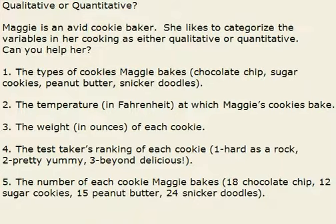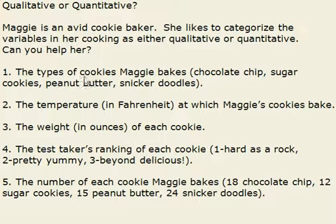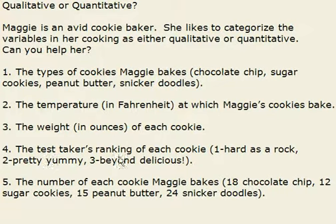Well, I sure hope we can help her. Below are five different variables, and if we do a brief scan, we're looking at types of cookies, the temperature, weight, a ranking, and the number.